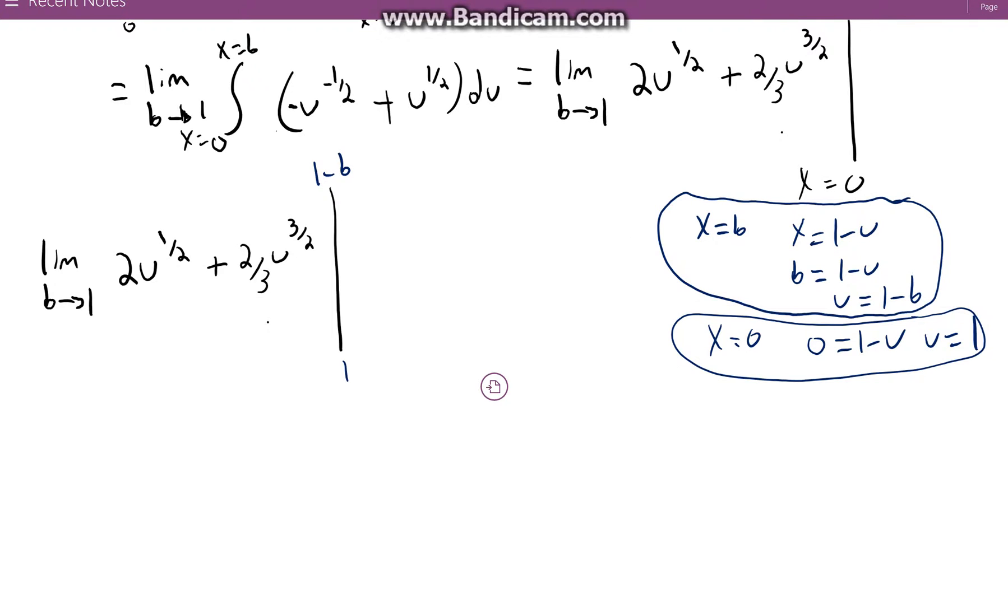The next step is to write the terms for when u is equal to 1 minus b minus when u is equal to 1. So let's write that. The limit as b approaches 1 of 2, 1 minus b, that's a terrible b, there we go, plus 2 thirds, 1 minus b, 3 over 2 minus.